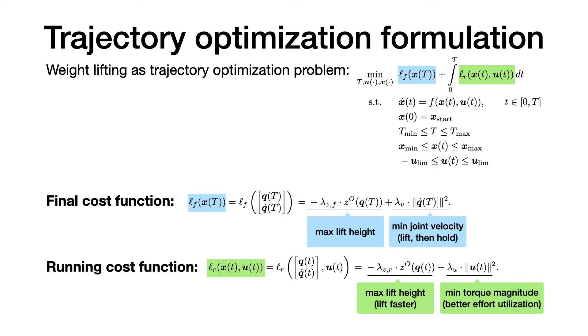In this project, I use the trajectory optimization framework for the weightlifting task. In the trajectory optimization problem shown on the slide, the goal is to solve for the control U and the state trajectory X which minimize the trajectory cost.